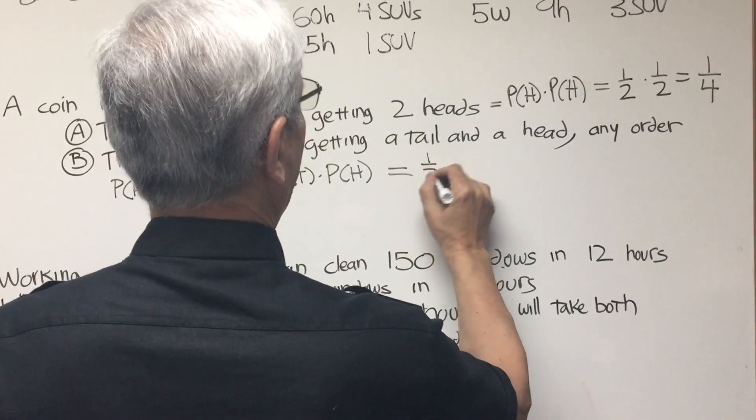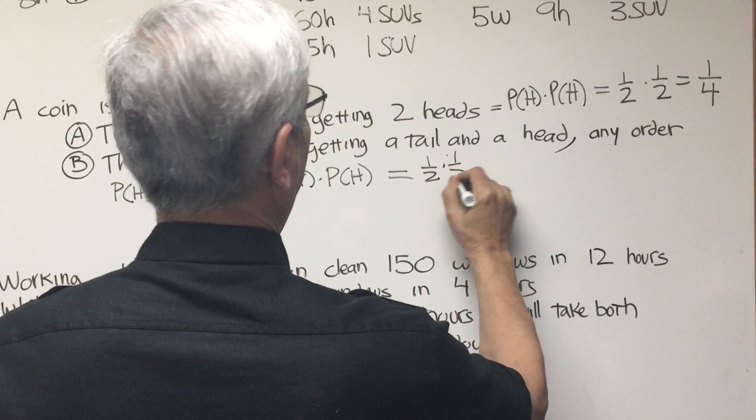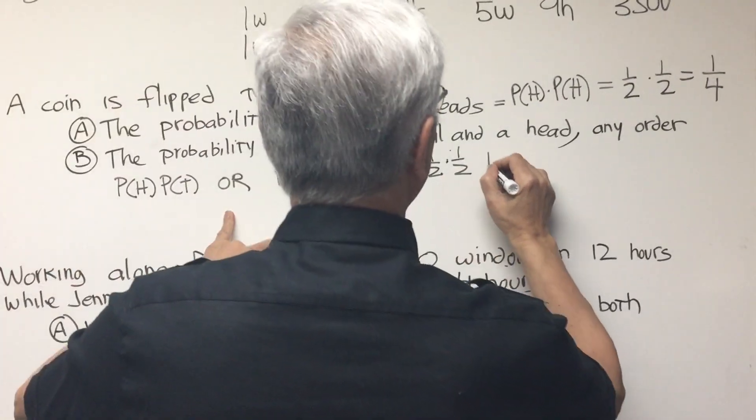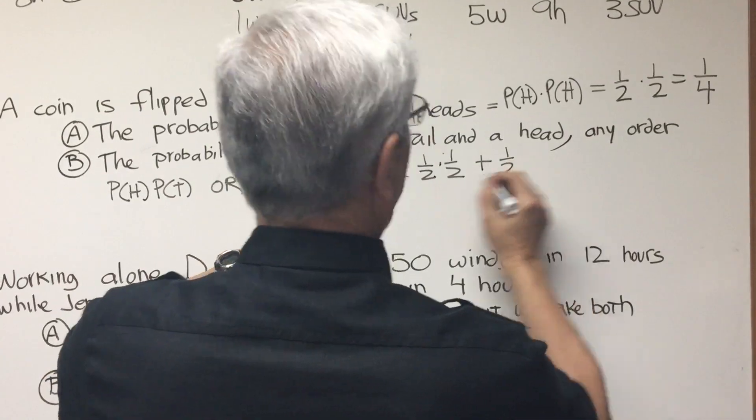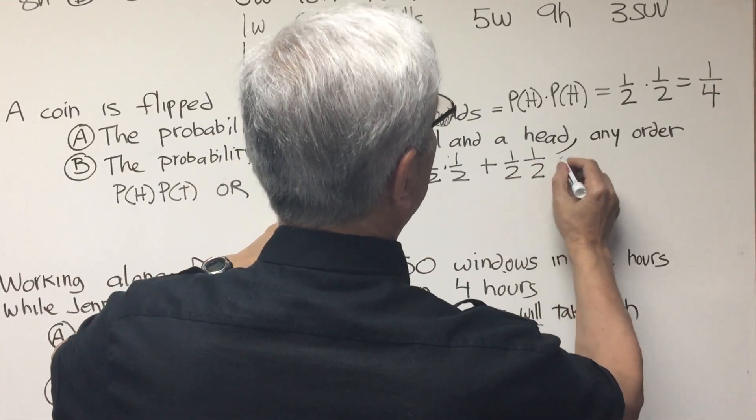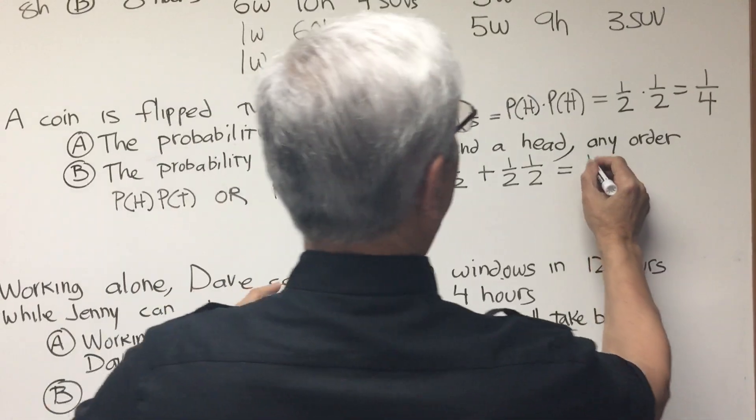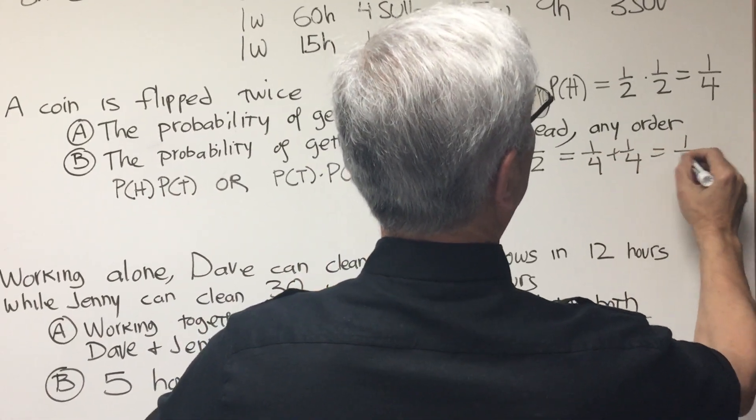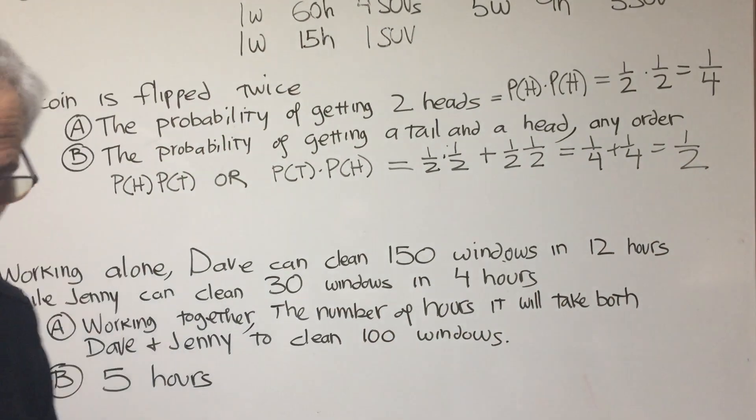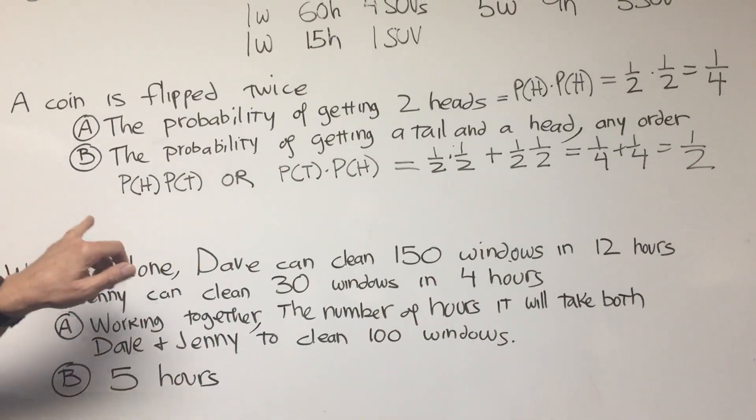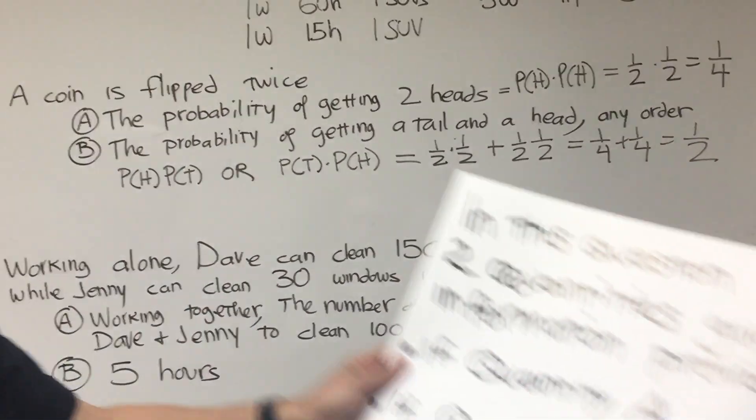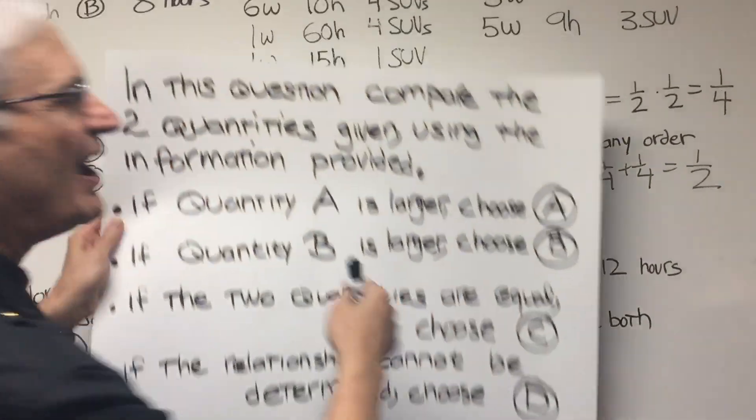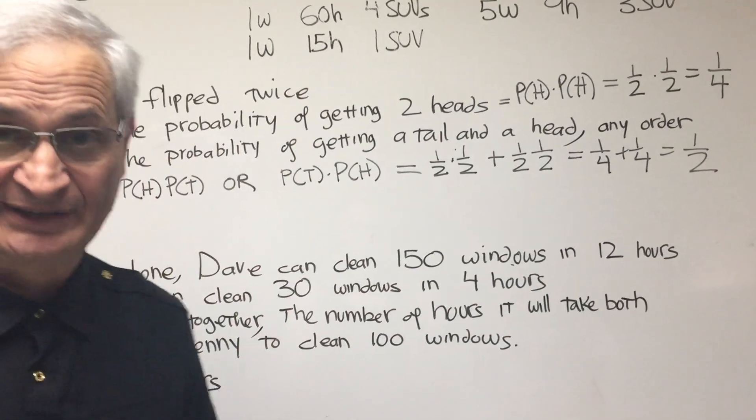The or is going to turn into addition, plus one-half, probability of tails is one-half, probability of heads is one-half, so it's one-fourth plus one-fourth, and that's equal to two-fourths, or one-half. So in this case, quantity B is larger, and if you remember the preamble, if quantity B is larger, choose B, and that's the solution in this case, quantity B.